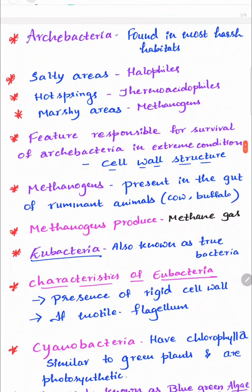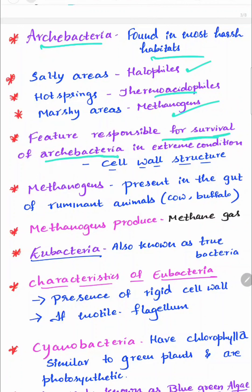Archaebacteria are found in the most harsh habitats. If found in salty areas they are called halophiles. If found in hot springs they belong to thermoacidophiles. In marshy areas they are called methanogens. The feature responsible for their survival in extreme conditions is their cell wall structure.